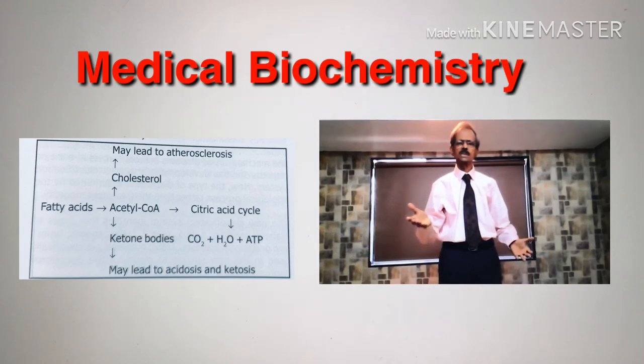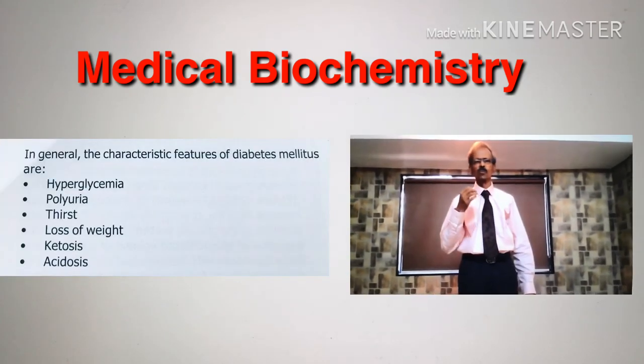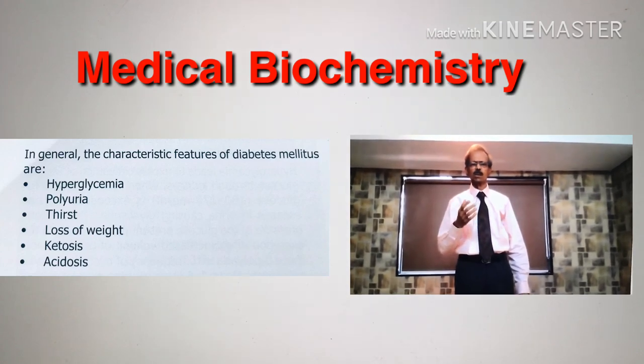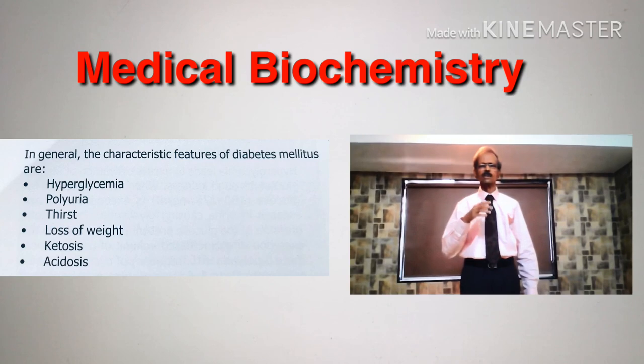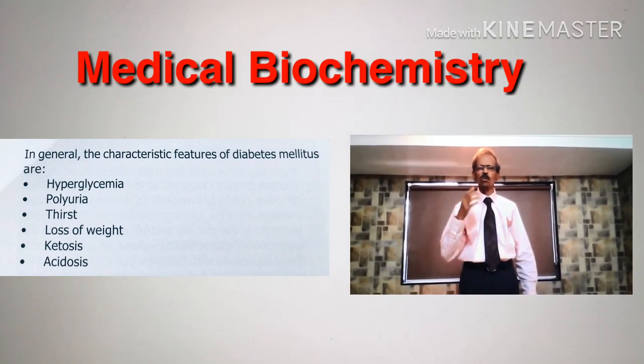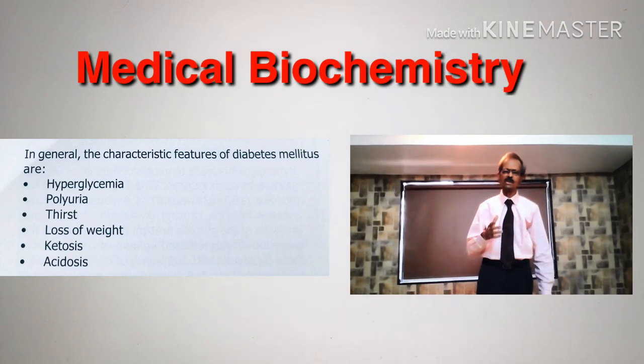A state of hyperglycemia develops. Glucose increases in blood circulation and the body excretes more urine, and the person suffers from polyuria, thirst, loss of weight, ketosis, and acidosis.